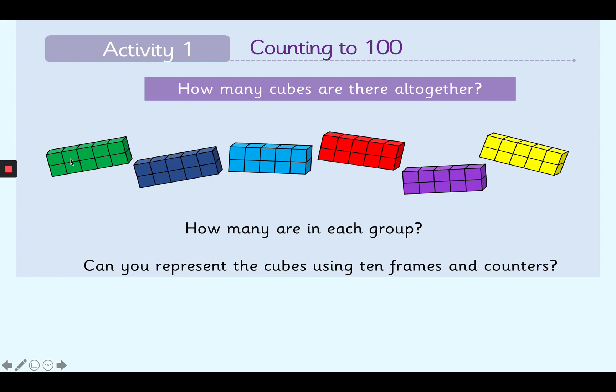1, 2, 3, 4, 5, 6, 7, 8, 9 and 10. So we know that one of these blocks is 10 cubes. And all of these have the same number of cubes. So have you worked out how many cubes there are all together?